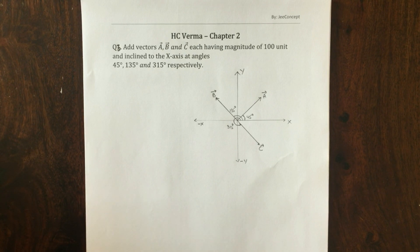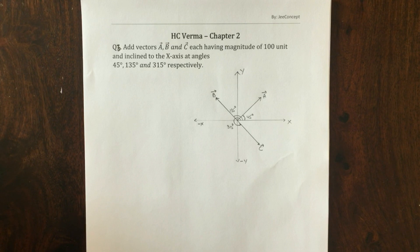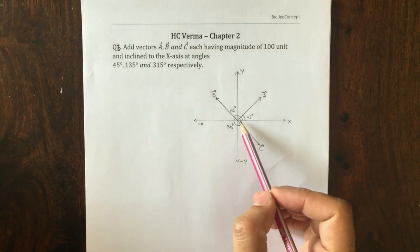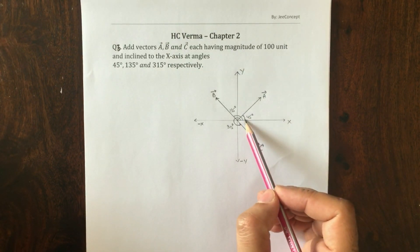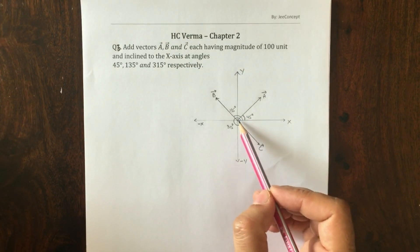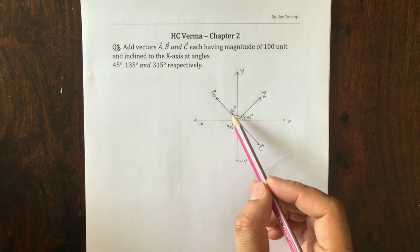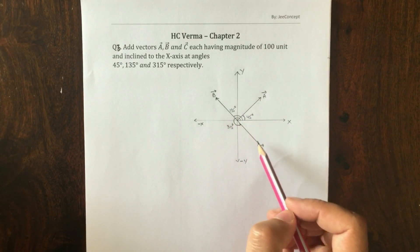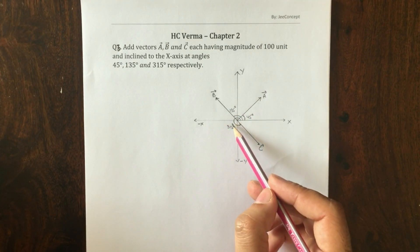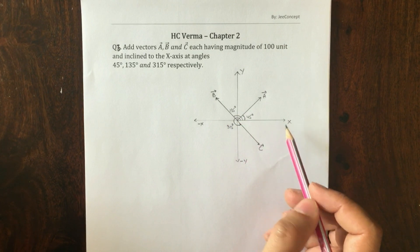So the question says: add vectors A, B and C, each having magnitude of 100 units and inclined to the x-axis at angles 45 degrees, 135 degrees and 315 degrees respectively. I have drawn these 3 vectors — vector A inclined at 45 degrees, vector B at 135 degrees, and vector C at 315 degrees with the x-axis.